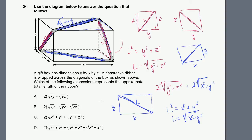So the total length of the ribbon is 2 times the square root of x squared plus y squared, plus 2 times the square root of y squared plus z squared. That looks like choice C — they just factored the 2 out: 2 times the quantity square root of x squared plus y squared plus square root of y squared plus z squared.